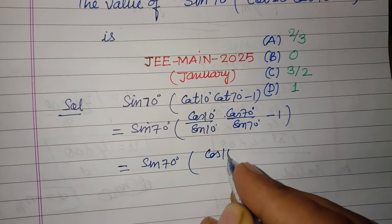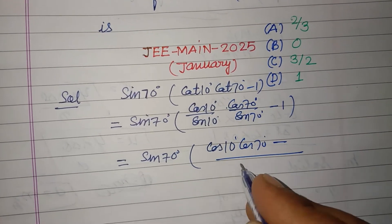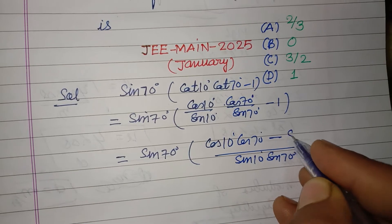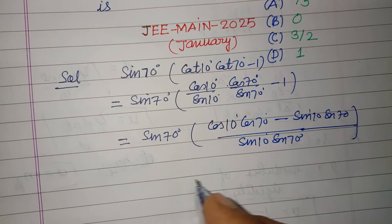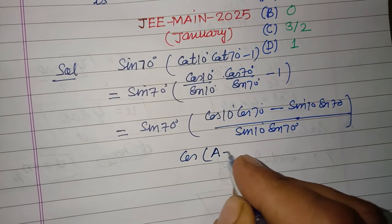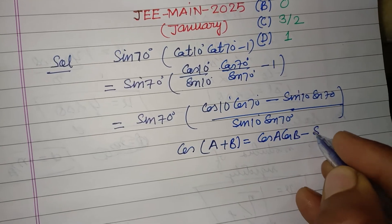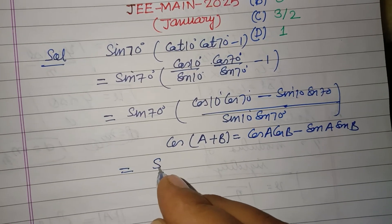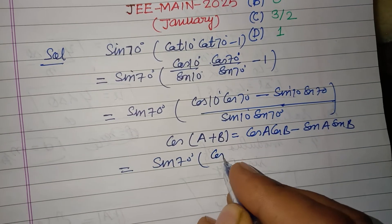Now we take the LCM of sin 10 and sin 70. The numerator becomes cos 10 times cos 70, and we subtract sin 10 times sin 70. We recognize that cos A cos B minus sin A sin B equals cos(A plus B), so we apply this identity. This gives us sin 70 times cos(A plus B) — that is cos(10 plus 70) — over sin 10 times sin 70.